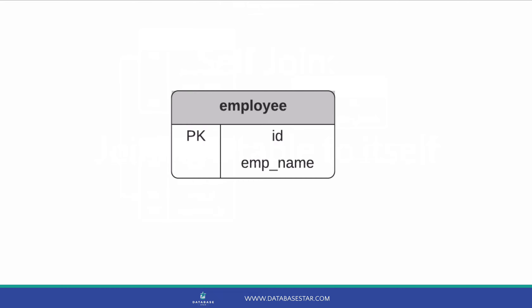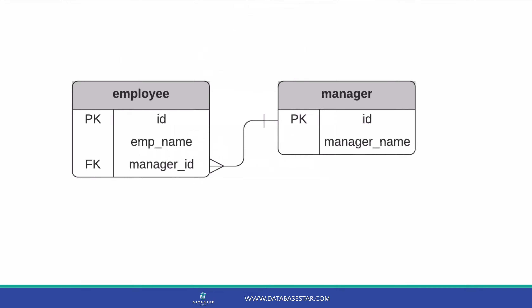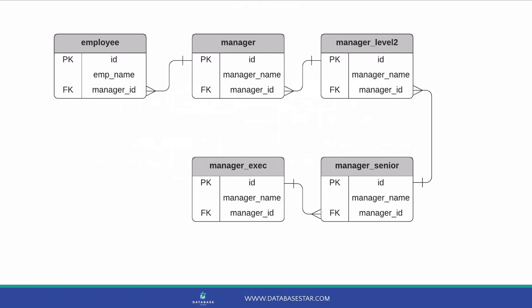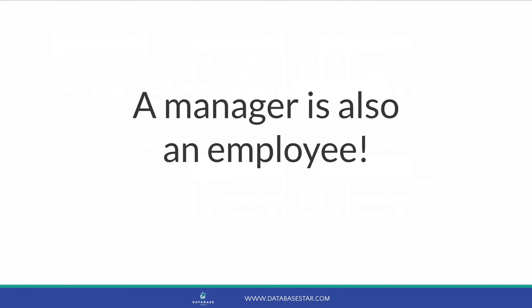We have an employee table that has an ID and a name. How do we store an employee's manager? We could create a second table called manager, where a manager can have one or more employees. But then what about the managers of those managers? We could create another table for each level of manager, but that means the structure isn't very flexible and our queries can get complex. If we think about the concept of a manager, we may realise a manager is also an employee, so we can store the manager's details in the employee table in the same way as other employees.